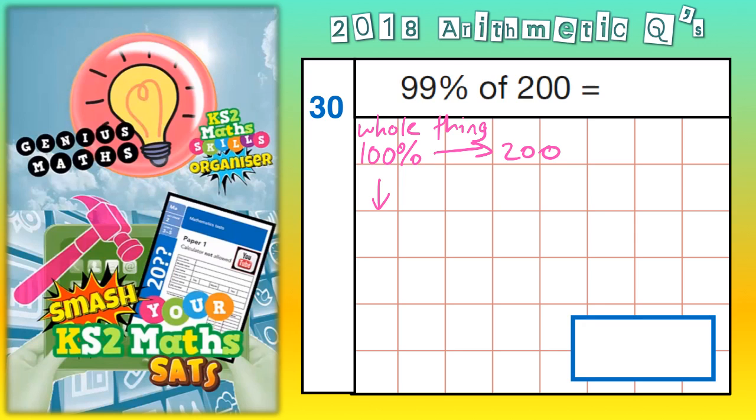So to get from 100%, we usually think about going down to 10%. So to get from 100% down to 10%, you're actually dividing by 10. So that means you need to divide the 200 by 10 as well. And 200 divided by 10 is 20. So if 100% is worth 200, 10% is worth 20.